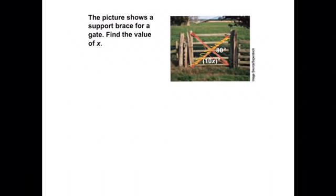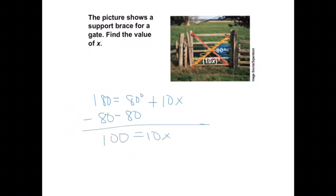So if I have 180 degrees, I know that I'm combining my 80 degree angle right over here with my 10x. So now to solve this, I have minus 80, minus 80. So I get 100 equals 10x. Divide both sides by 10. And I get 10 equals x.